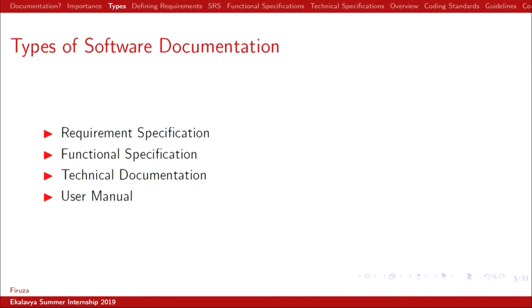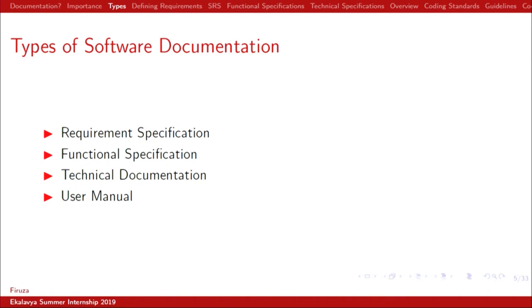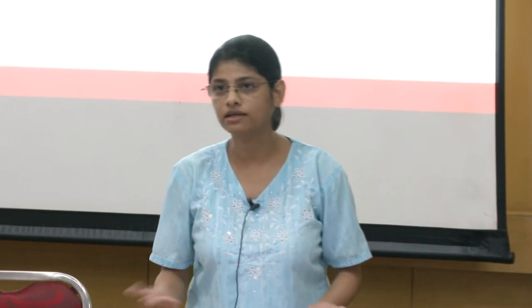Now, what are the different types of software documentation? Requirement specification, function specification, technical documentation, and the user manual. Requirement specification is generally written by the software developers based on the communication that has happened between the client, to identify the requirements. Functional specification — as the term suggests, it's about functionality: how to design a database, how efficient your interface should be. All those things go in functional specification.